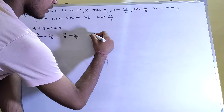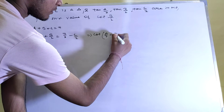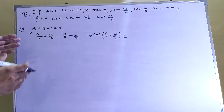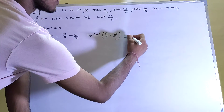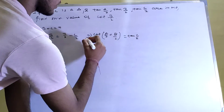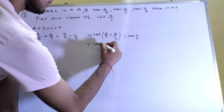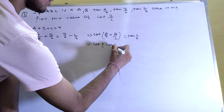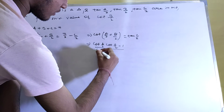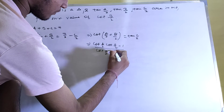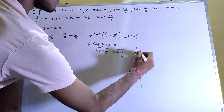cot(A/2 + B/2) = cot(π/2 − C/2) = tan(C/2). Expanding the left side using the cot addition formula: [cot(A/2)·cot(B/2) − 1] / [cot(A/2) + cot(B/2)] = 1 / cot(C/2).